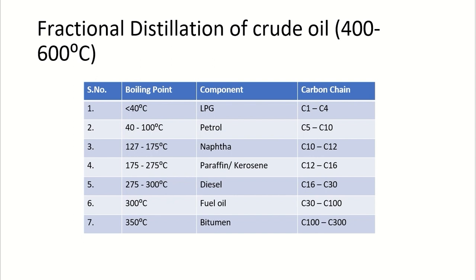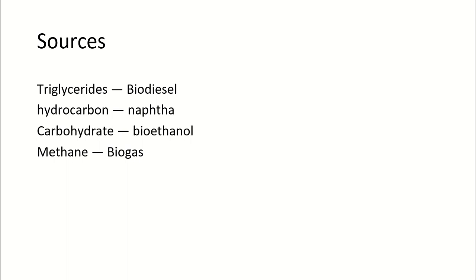Bitumen has a boiling point of 350°C with carbon chain C100–C300. Sources of some common fuels: triglycerides for biodiesel, hydrocarbon naphtha, carbohydrate for bioethanol, and methane for biogas.